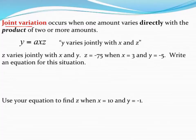When two things vary jointly, all that means is you have multiple things that are varying directly. So rather than just y equals a times x, which is our direct variation equation, we have multiple things.